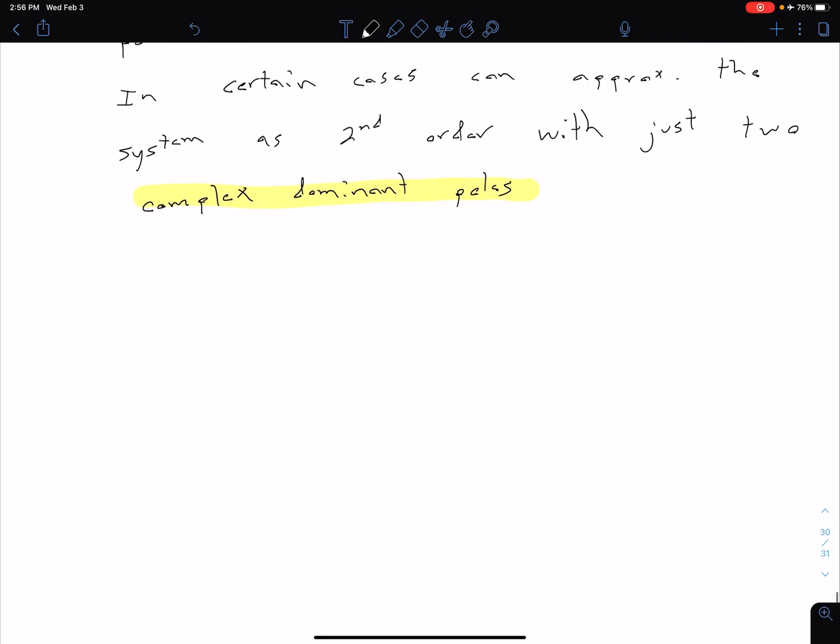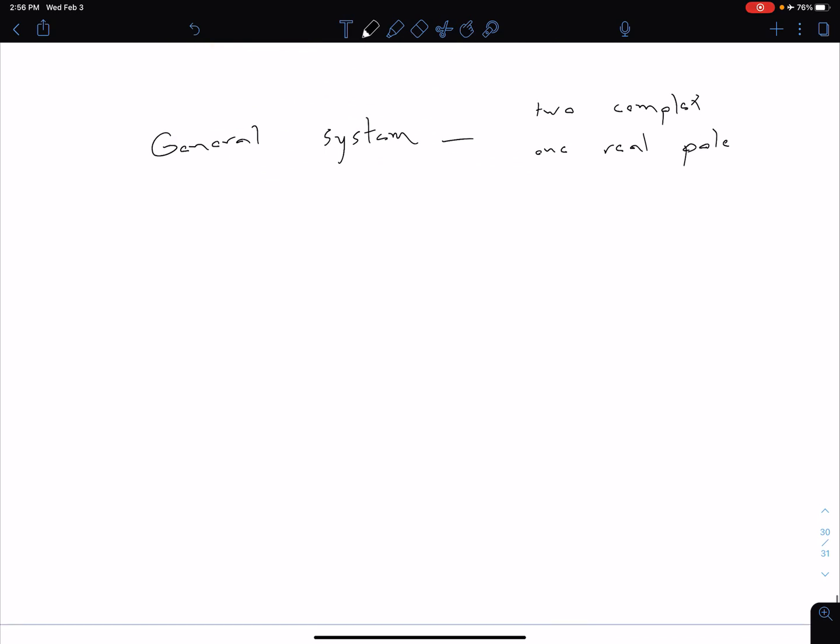So let's look at a general system with two complex poles and one real pole. We're going to consider a general system that has two complex poles, which is what we were already considering before, but now we're going to add in one real pole as well. Let's go ahead and sketch out what this looks like on our S-plane.